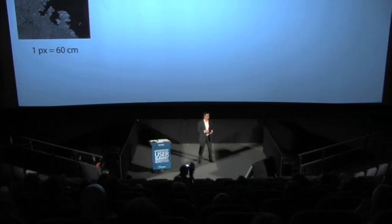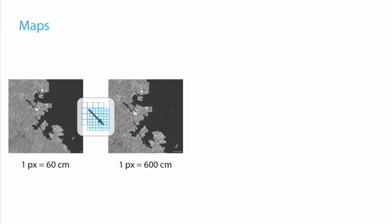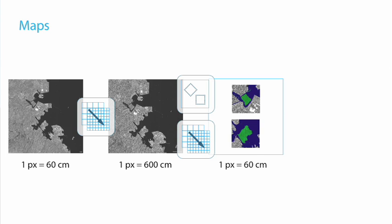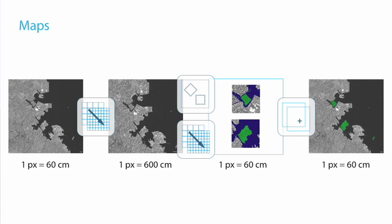Looking at that data set — a QuickBird scene with 60 cm resolution covering part of Japan — the task is to find all the islands in that area. Maps provide a very efficient way to do this by downscaling the data set to a low-resolution version about a tenth of the original size, finding the islands quickly, then using regions and rescaling to isolate each island, bring them back to full resolution into individual maps, and perform detailed analysis. Finally, all found islands can be copied back into the main map.